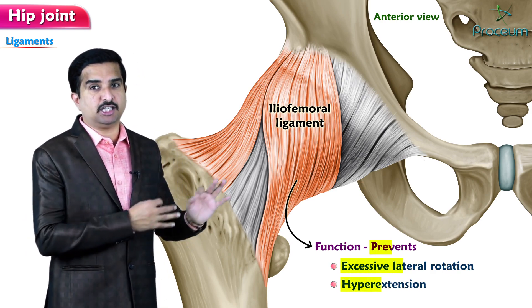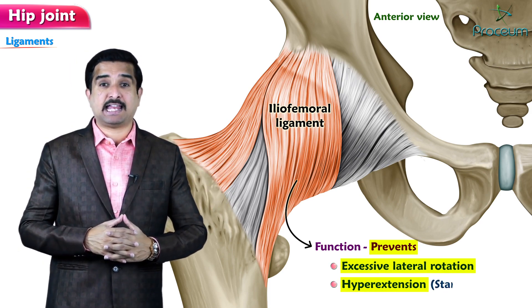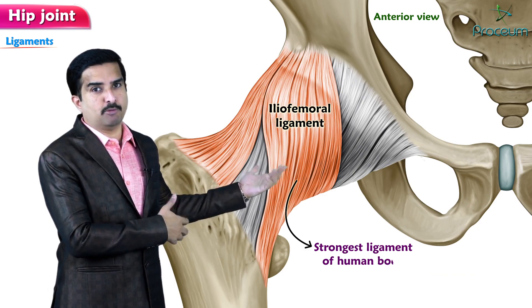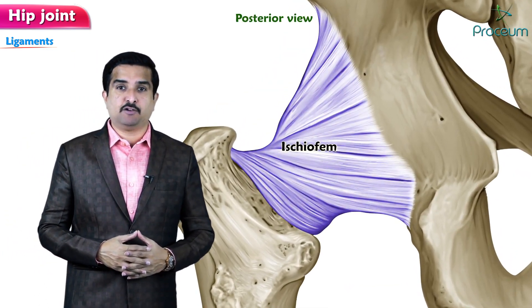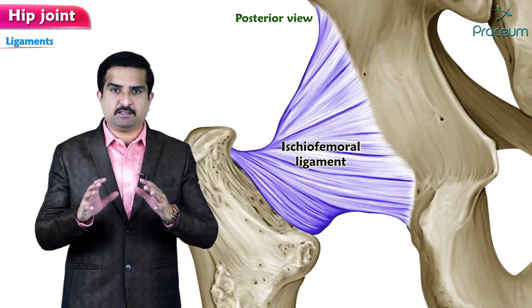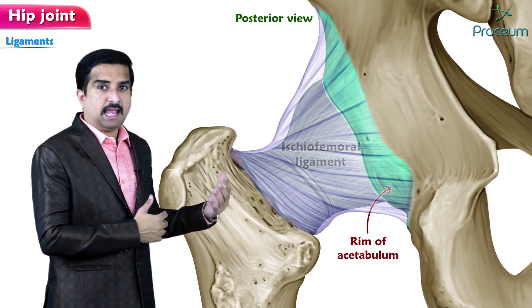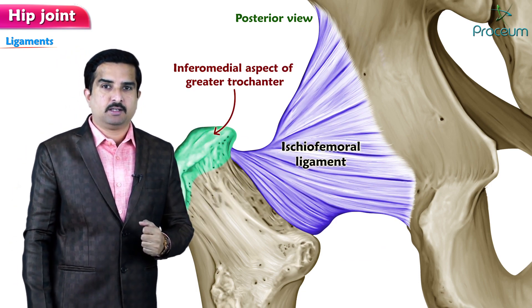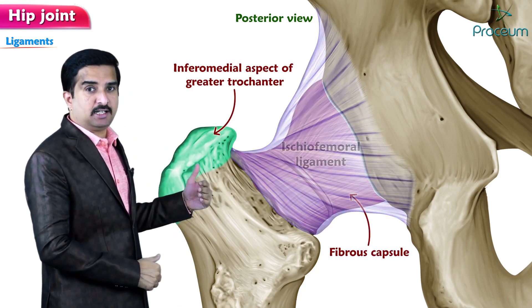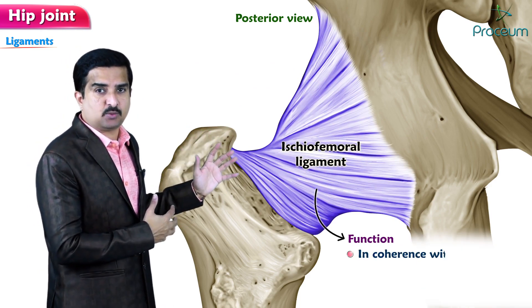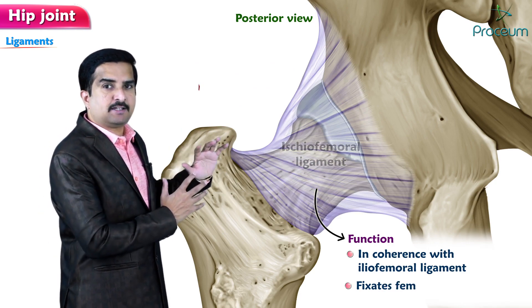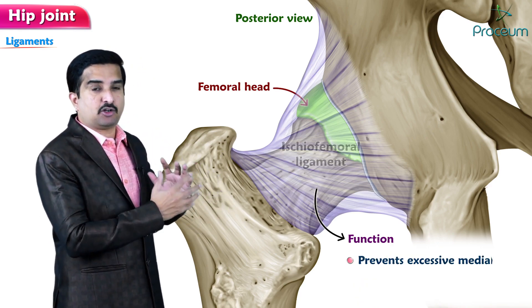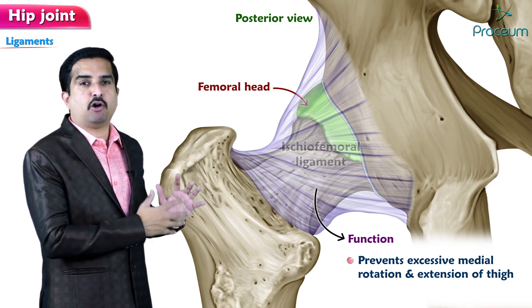This is especially important when the subject is in the standing position. Another key point: the iliofemoral ligament is the strongest ligament of the human body. The second important ligament is the ischiofemoral ligament, which originates at the rim of the acetabulum and inserts over the inframedial aspect of the greater trochanter of the femur. It reinforces the fibrous capsule anteriorly, functions in coherence with the iliofemoral ligament, and fixates the femoral head in the acetabulum. It prevents excessive medial rotation and extension of the thigh.